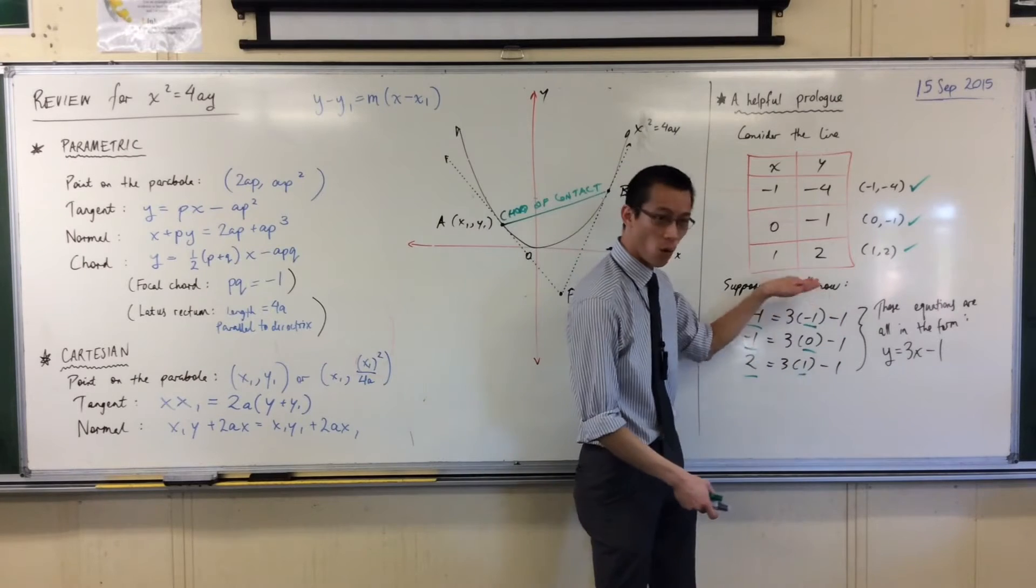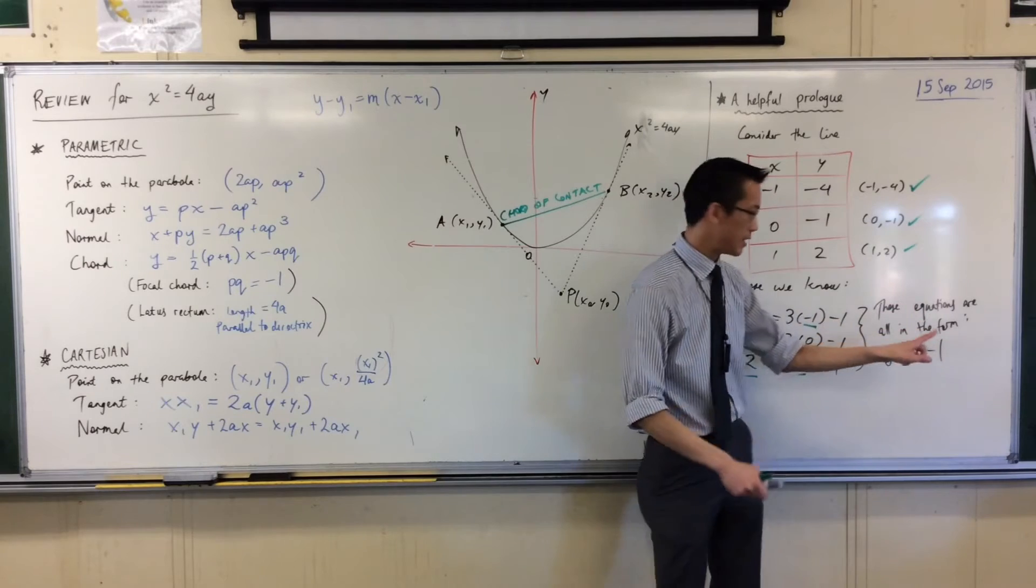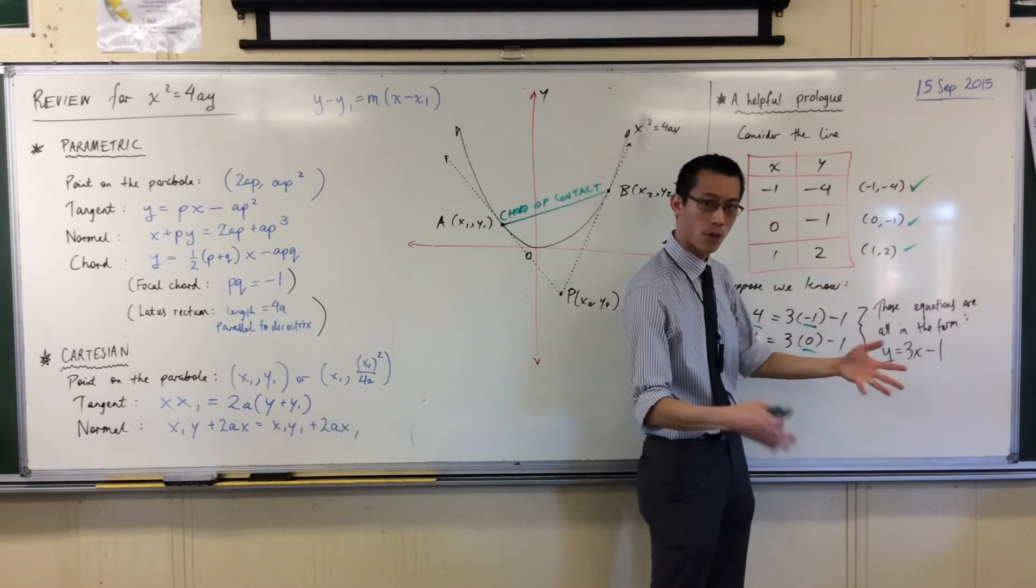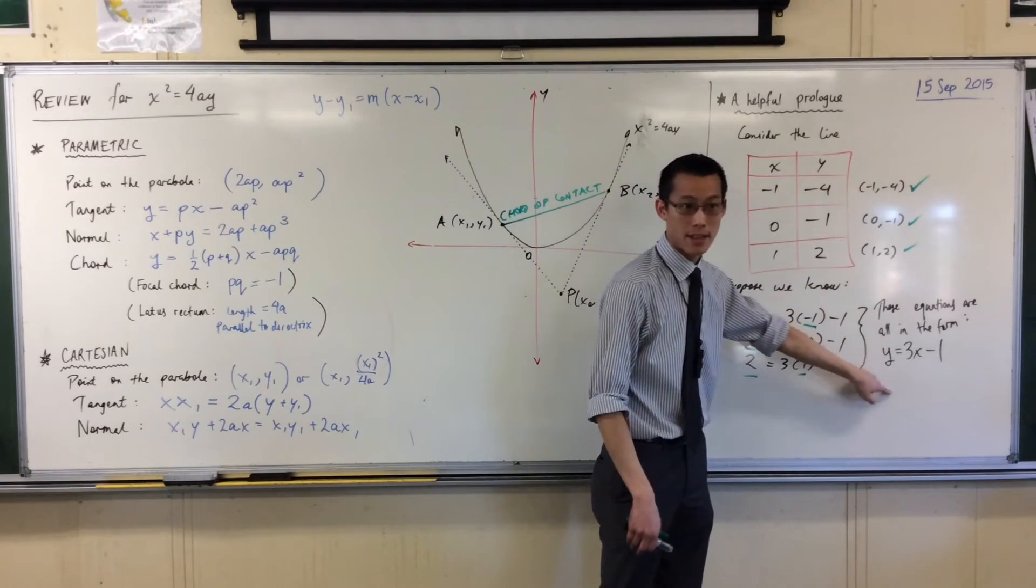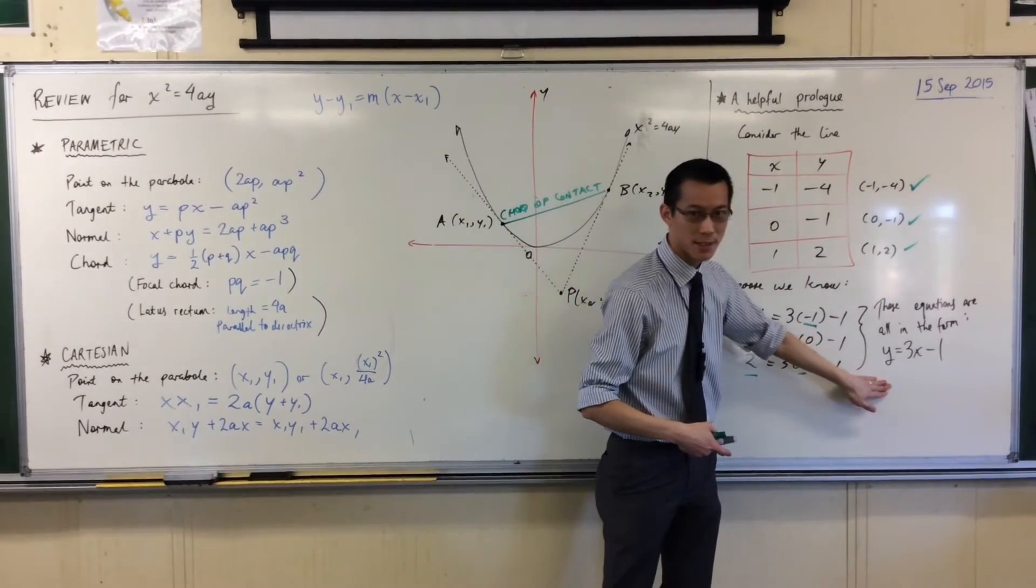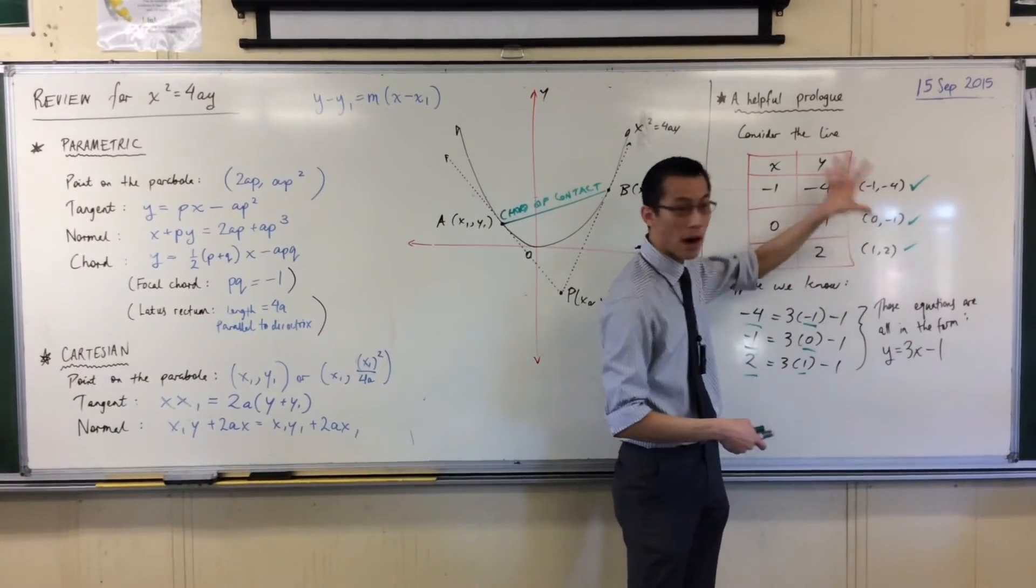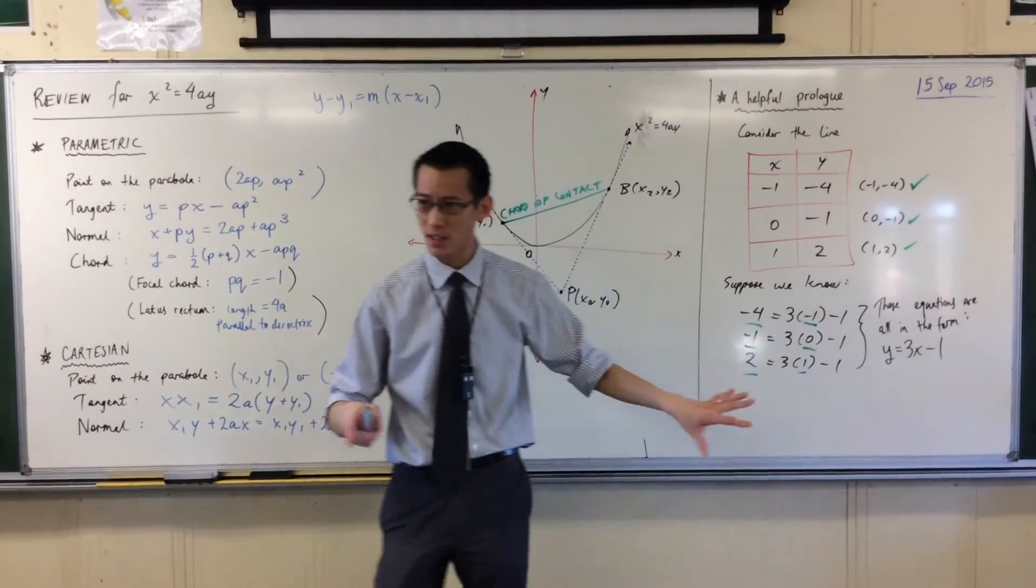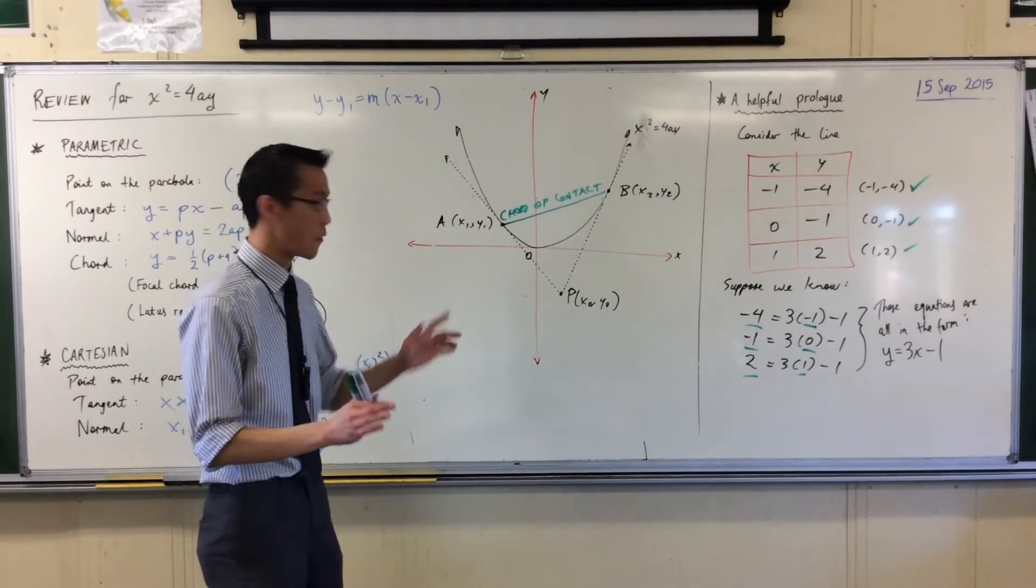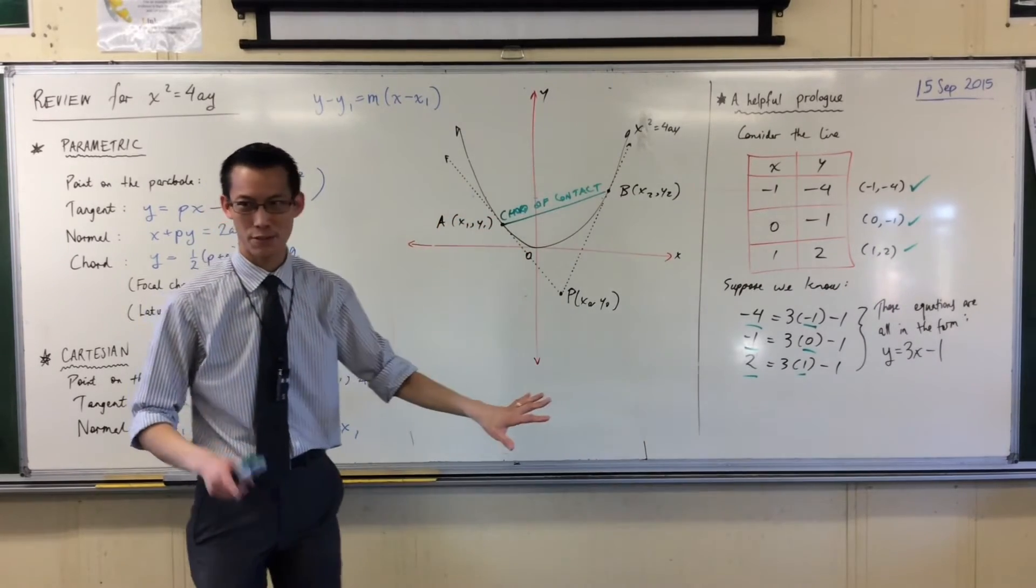So, now that I'm saying all these equations are in this form for this set of points, what that means is this is the equation that goes through all of those points. This is like the converse of saying if these satisfy this, then they're on there. I'm saying this satisfies all of these, therefore this must be the line that passes through all of them. It's a converse. We don't use converses that often, which is why when we pull that out for the chord of contact, it's a little bit eyebrow raising.